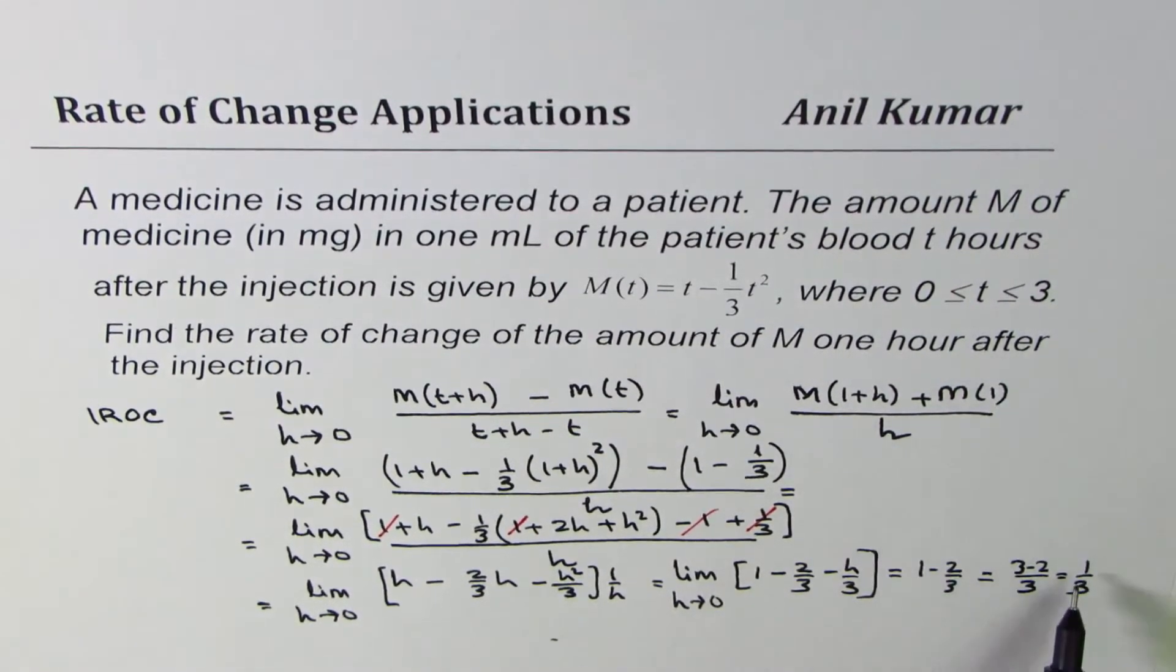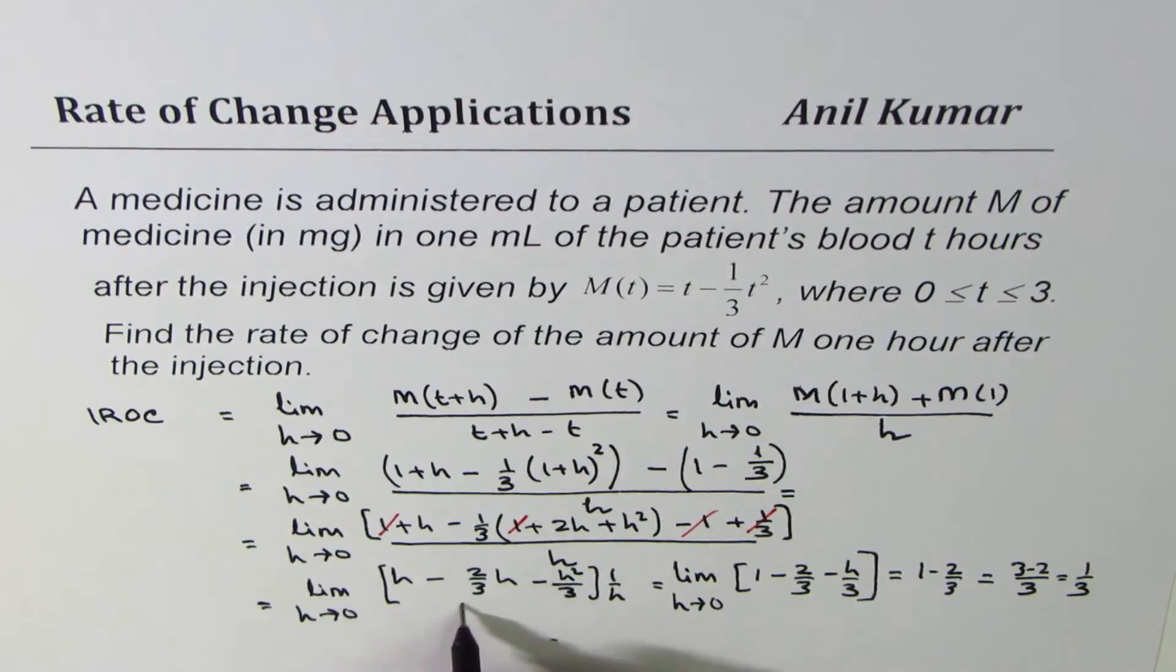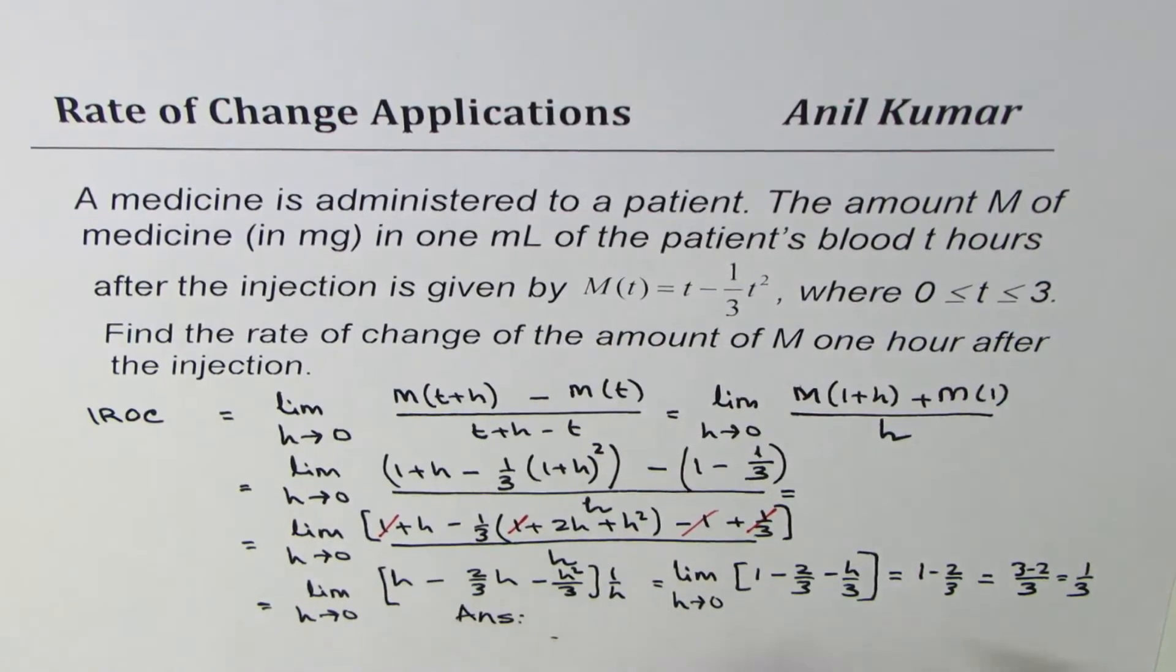So the rate of change after an hour will be 1/3. The units are milligrams per hour, is it okay?